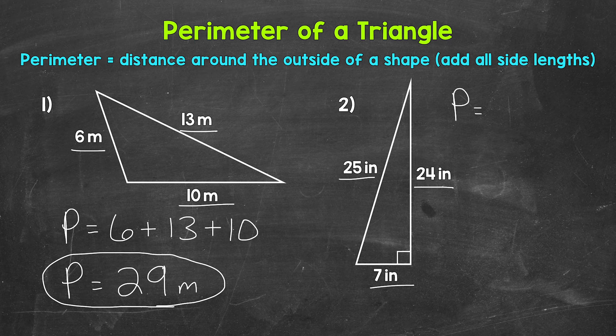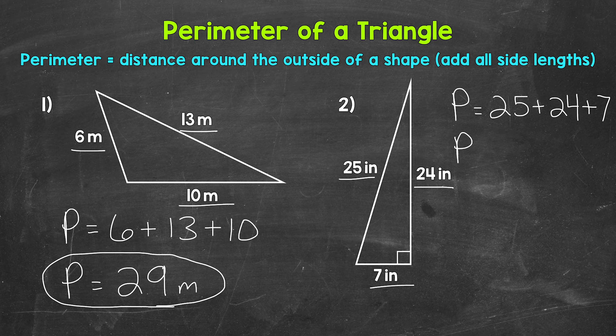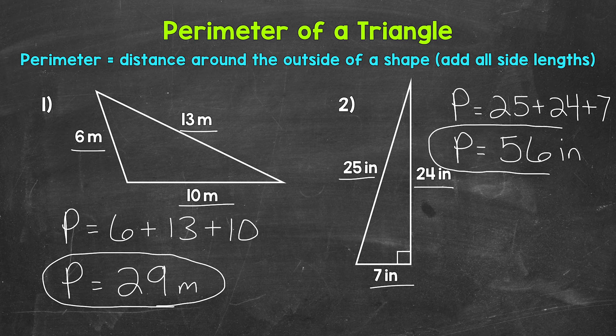Perimeter equals 25 plus 24 plus 7. 25 plus 24 gives us 49, plus 7 gives us 56. So the perimeter is 56 inches. The distance around that triangle is 56 inches.